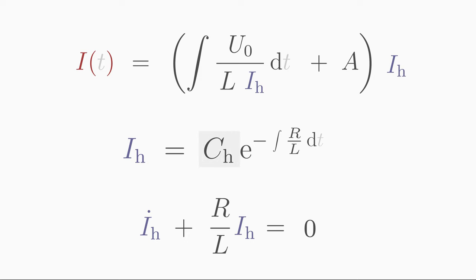We may omit the constant Ch in the solution formula here because we consider it later anyway in the constant A, which we find in the other solution formula. The coefficient R over L is constant and integrating a constant only introduces a variable t. Thus the homogeneous solution Ih equals e to the power of minus R over L times t.